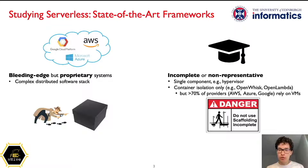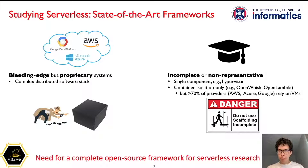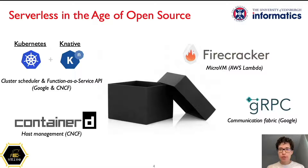Second, we analyzed the tool chains that academic researchers use in their experiments. Without access to proprietary systems, academics often resort to studying distinct components rather than complete systems. For example, many academic prototypes rely on outdated technologies like containers that are insufficient for high security, so that the service leaders have long moved on to using lightweight virtual machines instead. Hence, what is missing today is a complete open-source framework for serverless research.